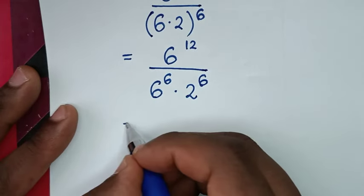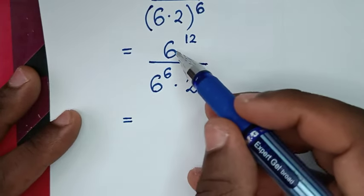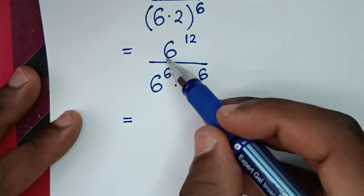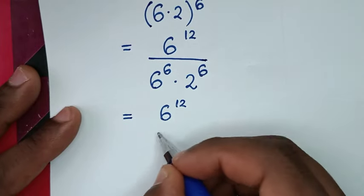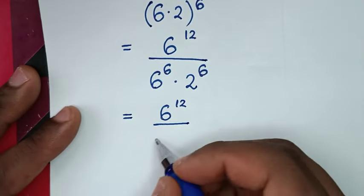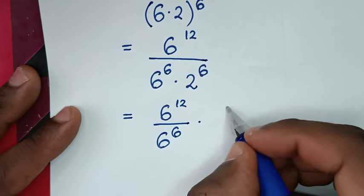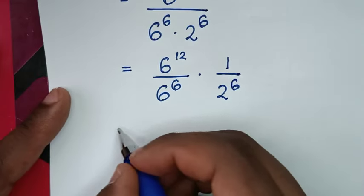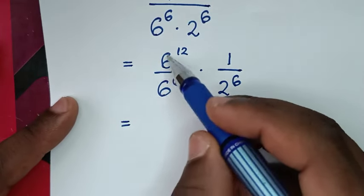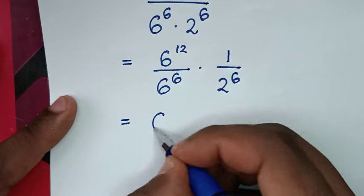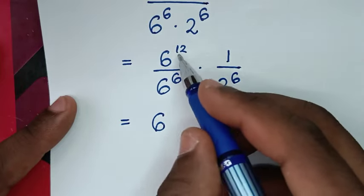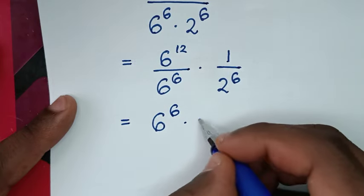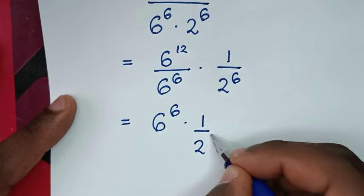Then it will be equal to: we divide — since we have division of exponents with the same base of 6, we get 6 power of 12 over 6 power of 6, times 1 over 2 power of 6. Applying the rule for division of exponents with the same base, we subtract the powers: 12 minus 6 equals 6. So we have 6 power of 6 times 1 over 2 power of 6.